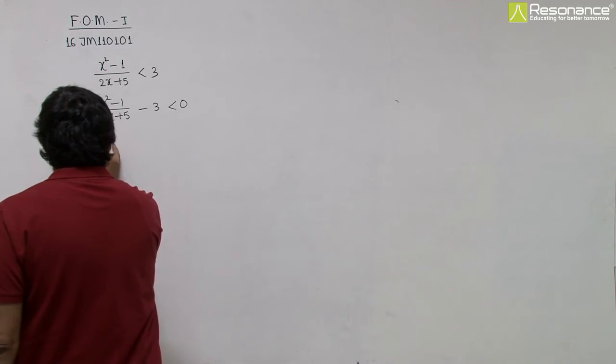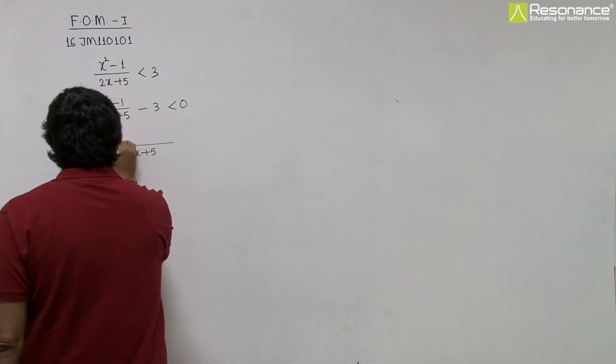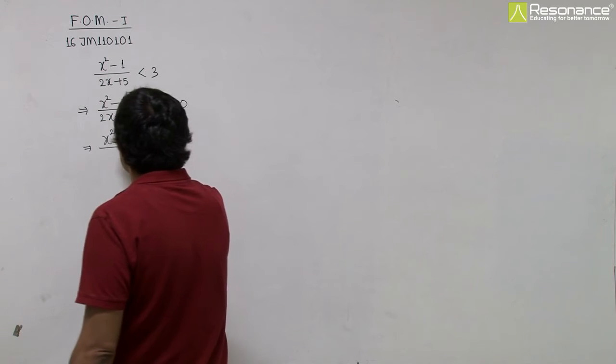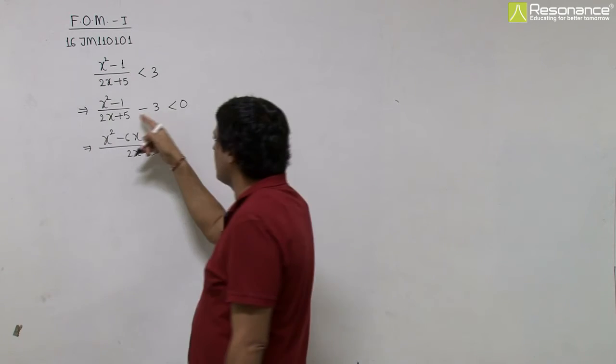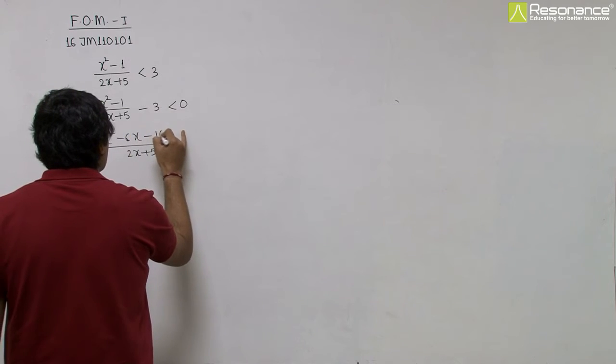On taking LCM, we have x square, this is minus 6x, minus 15 and minus 1. So I am writing directly, that is minus 16.